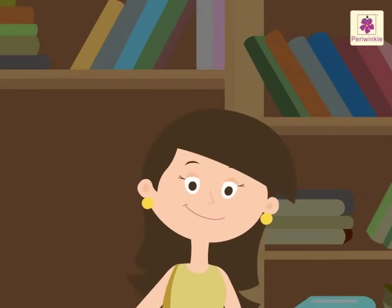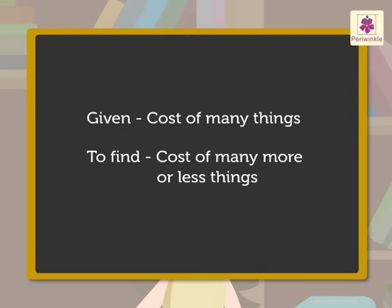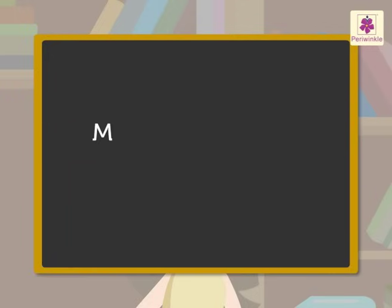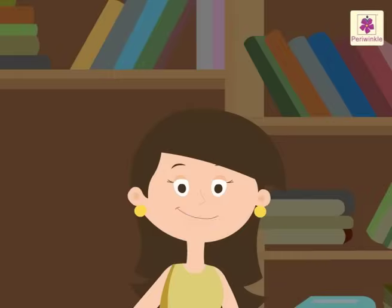Hello kids! In problems related to unitary method, the cost of many things would be given. We have to find the cost of many more or less things. For doing this, we first go from many to one and then from one to many, which we have already learnt.